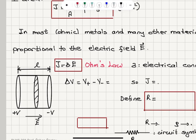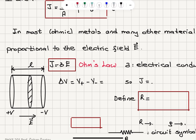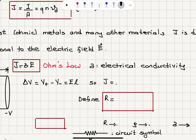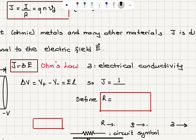Consider a segment of a conductor of length L with two sides at potential +V and −V, so the electric field points from left to right. The potential difference ΔV between the two ends — V-plus minus V-minus — equals the electric field E multiplied by L. Remember, the electric field E is minus the gradient of the potential. So the current density J equals I divided by area A, which by Ohm's law equals sigma times E, and since E = ΔV/L, we have J = σΔV/L.